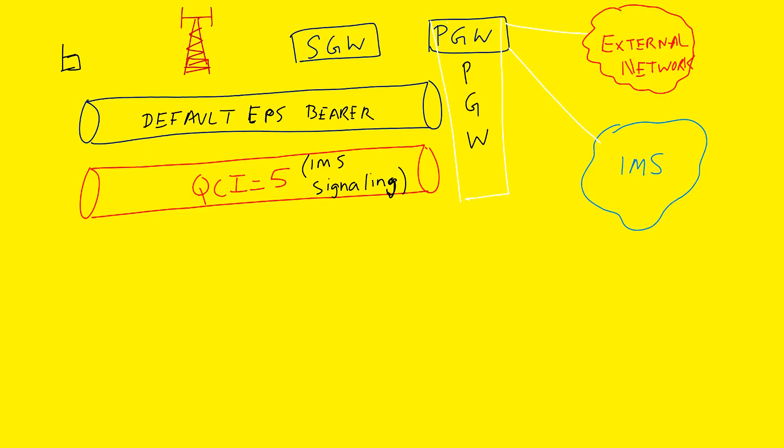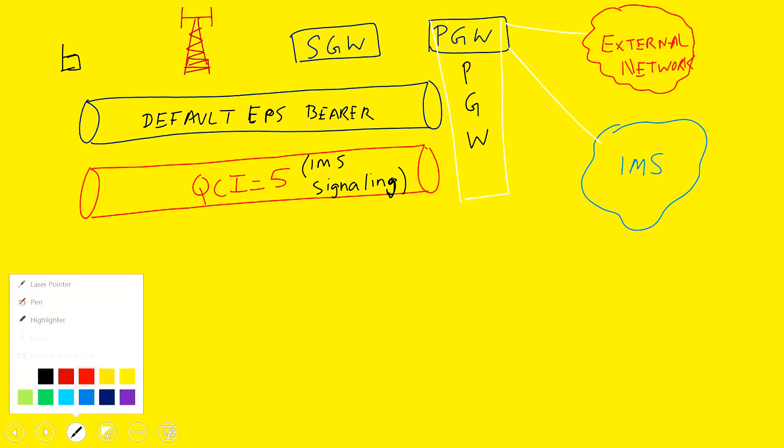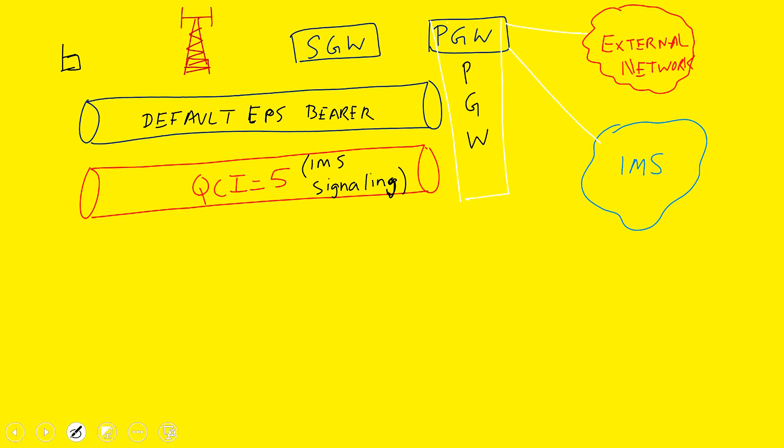I have drawn this diagram — not to explain how EPS bearer attach works in full, but just to answer Ramesh's question: QCI1 and QCI5 will not be established simultaneously unless there is a voice call going on.